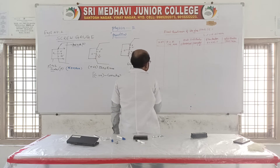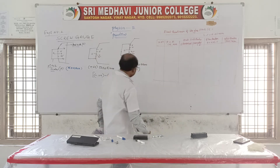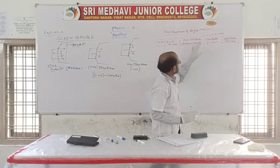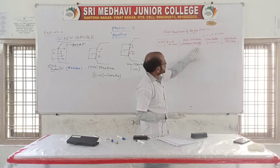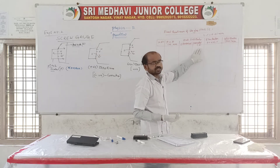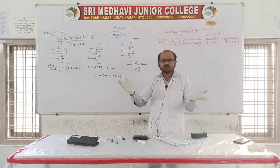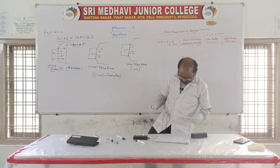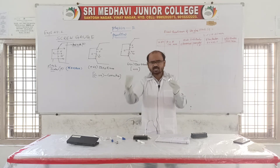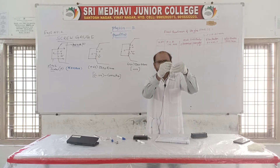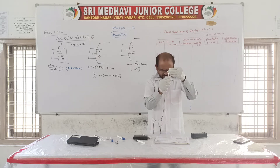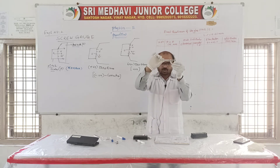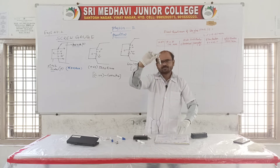If there are no errors, we can directly use the observed value. If there are errors, we correct them. Now, to find the thickness of a glass plate, place the glass plate between the two ends of the screw gauge and rotate it until it is fixed.